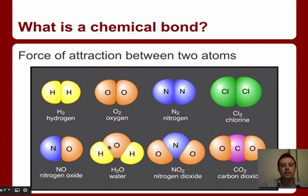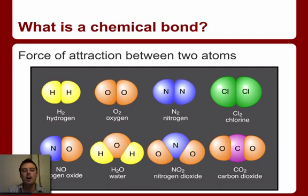As you can see here, you've got a bunch of different atoms. For example, hydrogen, oxygen, chlorine, carbon. And you can see that they have bonded with either another nitrogen, another chlorine, or possibly a different atom of a different element to form different compounds.